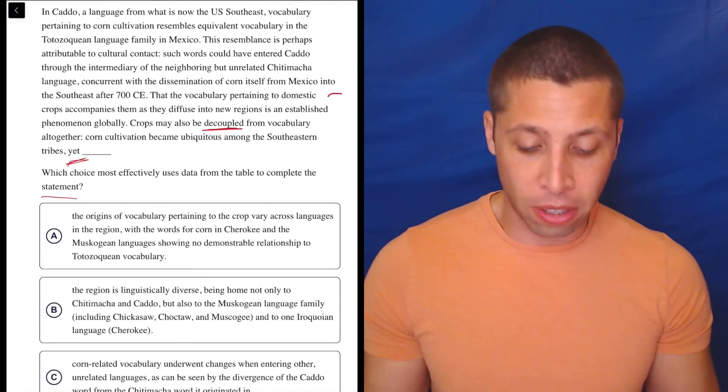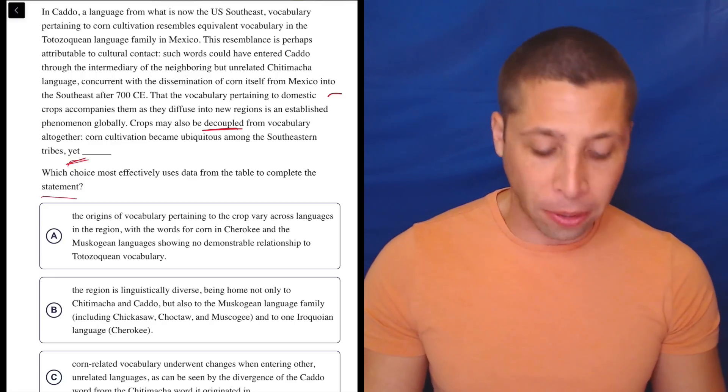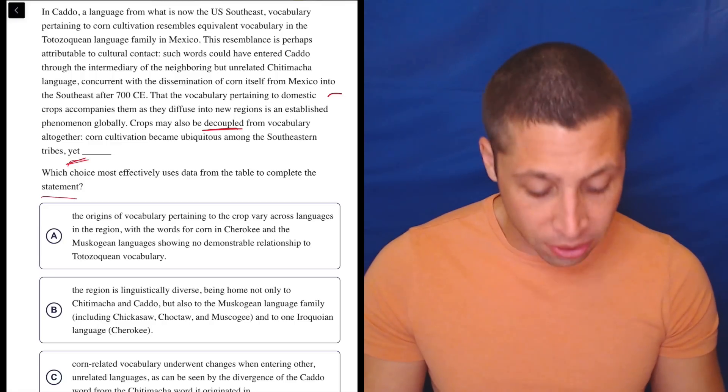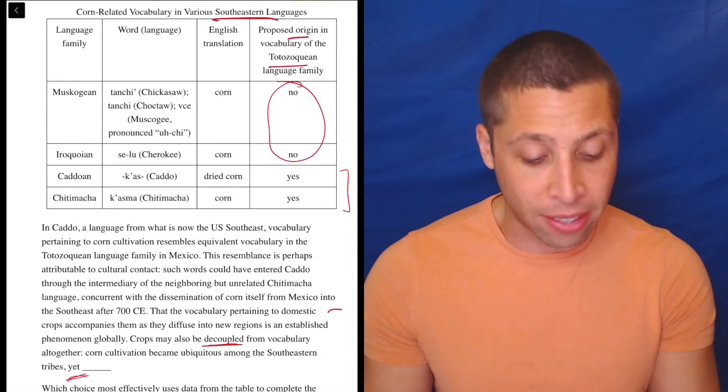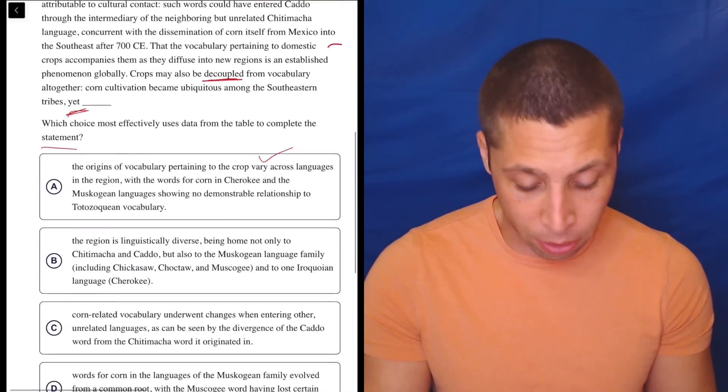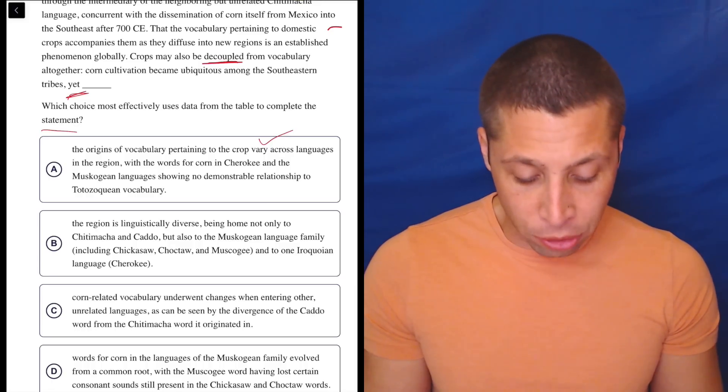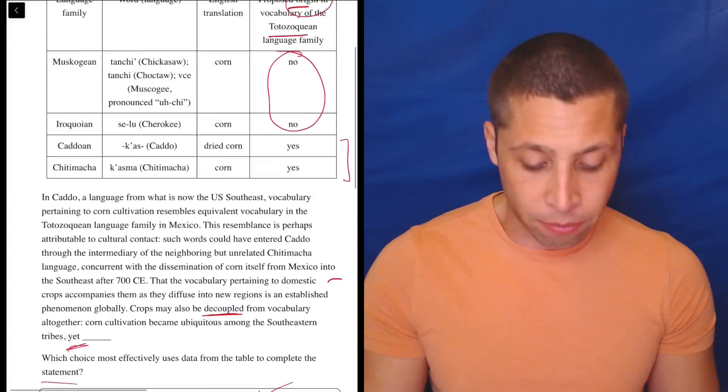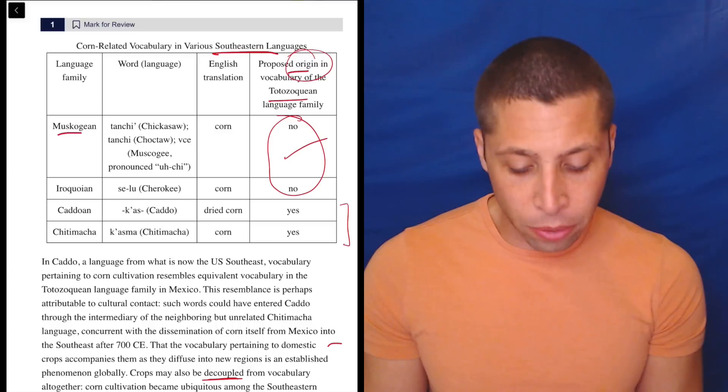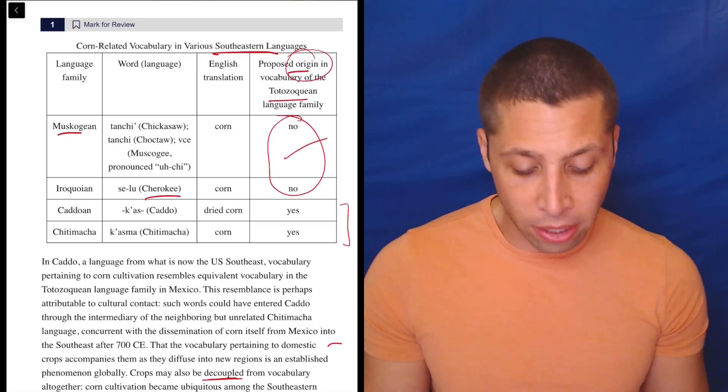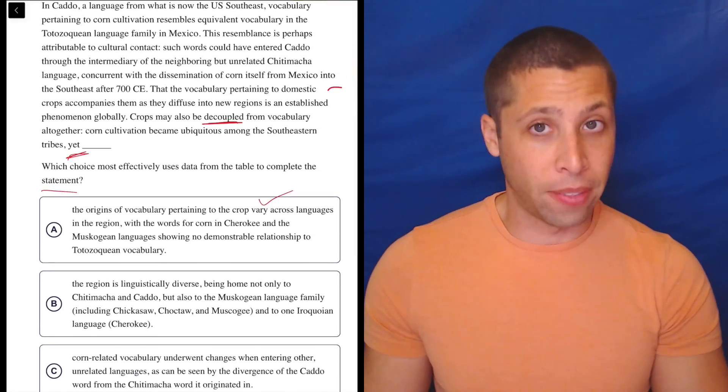We're talking maybe about the origins of the word for corn in these different languages. So A, the origins of vocabulary pertaining to the crop vary across languages in the region. Yeah, that's true, because some have a no and some have a yes in terms of the origin. With the words for corn in Cherokee and the Muscogean languages showing no demonstrable relationship to this other vocabulary. That's literally what these no's mean, they're saying the Muscogean and Cherokee are something different than the other ones. So there's nothing incorrect about this.